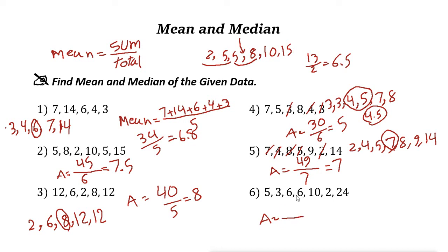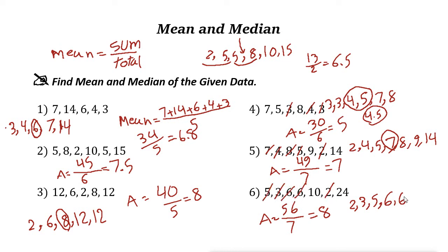For the final example, adding the values gives 56, divided by 7 numbers, so the average is 8. Writing the numbers in order: 2, 3, 5, 6, 6, 10, 24. Since we have 7 numbers, the number in the middle is 6. So the median is 6.